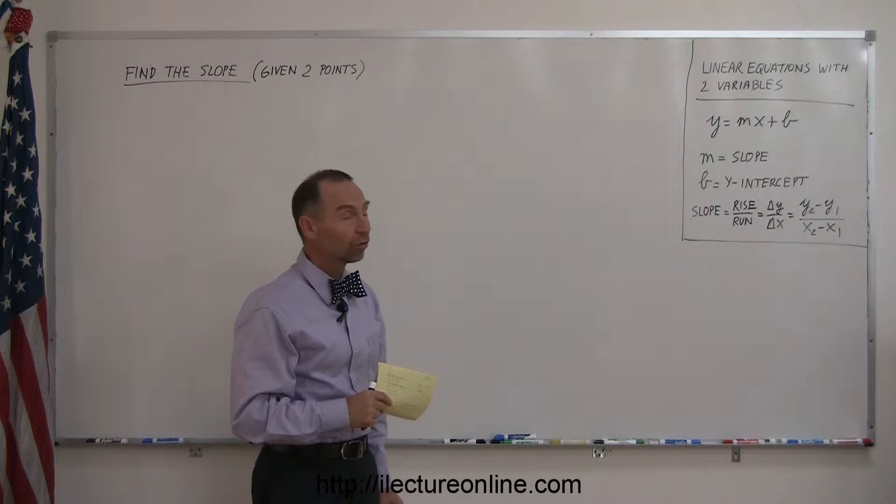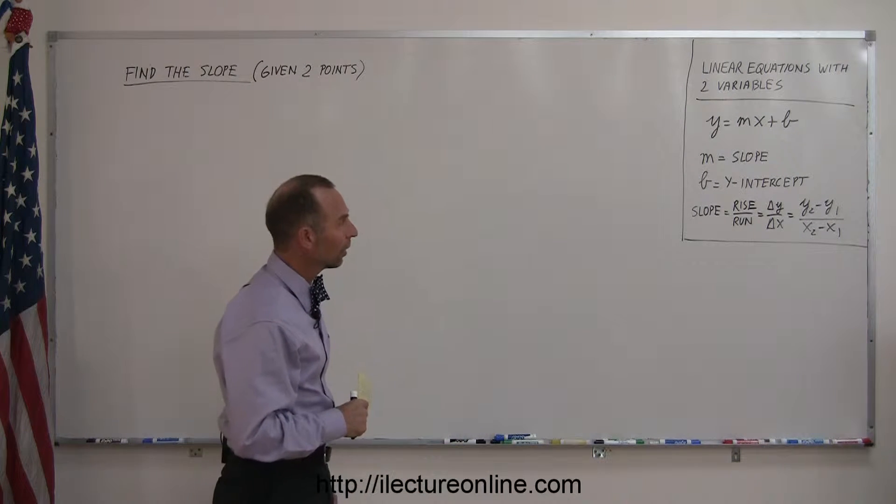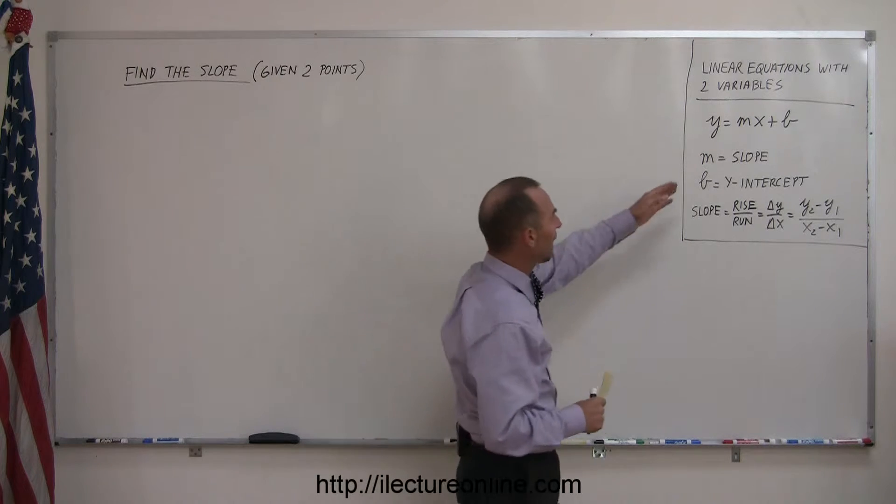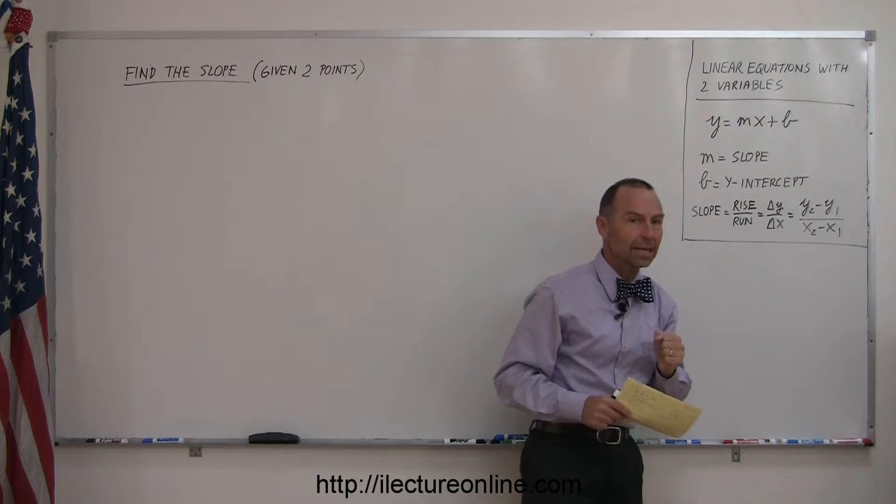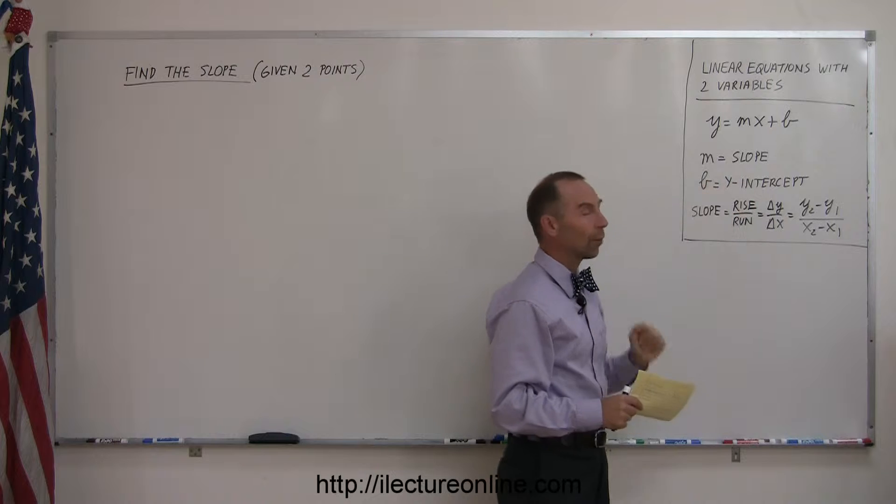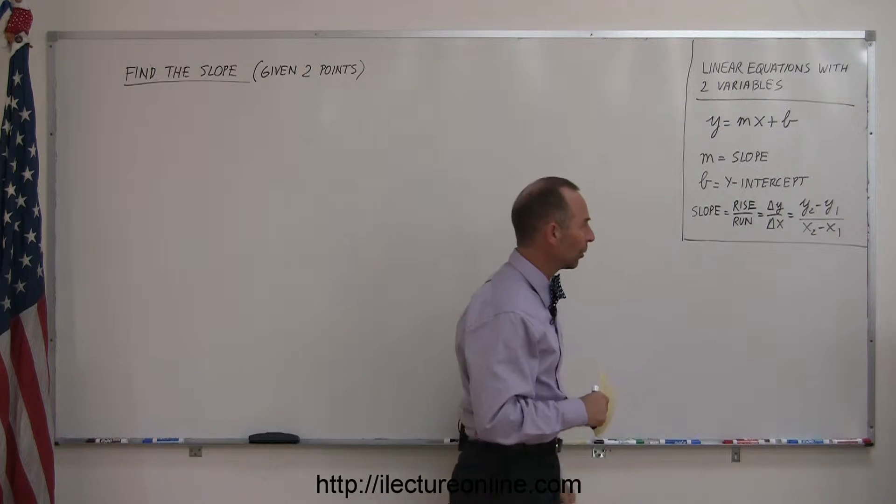Working with linear equations with two variables. The equation has a general format y equals mx plus b. m is known as the slope, b is known as the y-intercept. And we'll see in just a moment all that means.